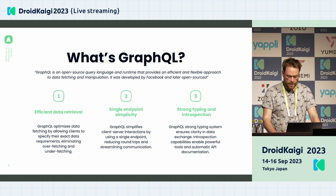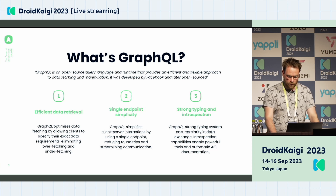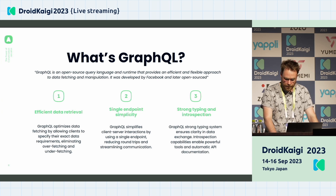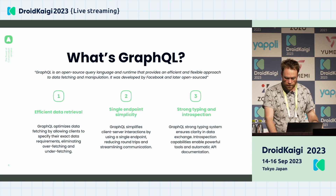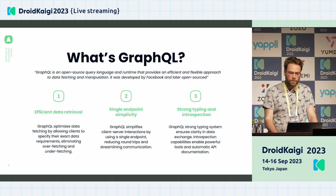It has single endpoint simplicity — no need to have multiple routes for your REST API. GraphQL simplifies the client-server interaction by using a single endpoint, reducing the number of round trips and streaming communication. It also has strong typing and introspection. GraphQL's strong typing system ensures clarity in data, and introspection capabilities enable powerful tooling and automatic API documentation.